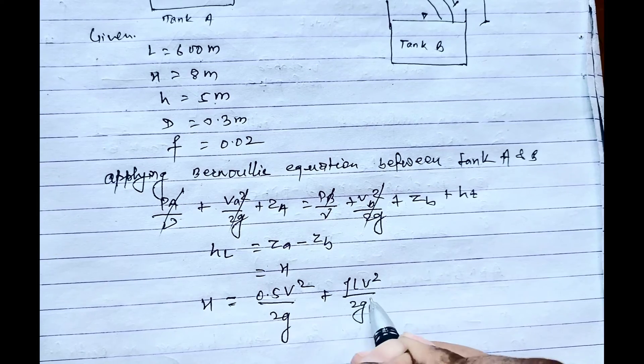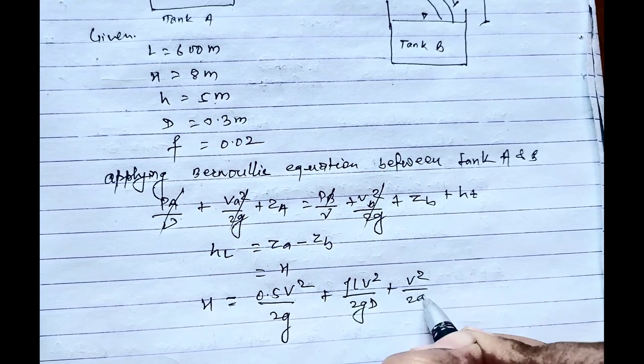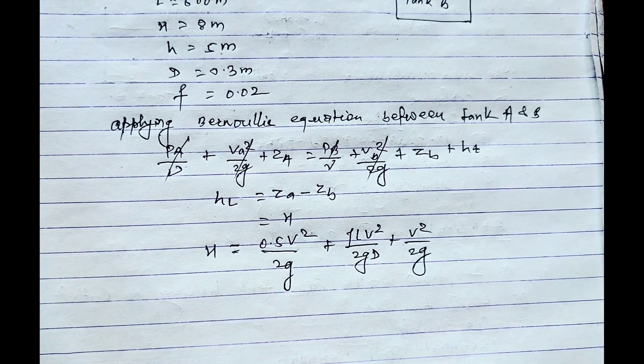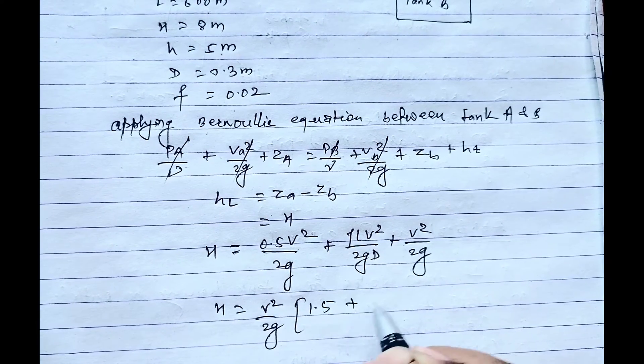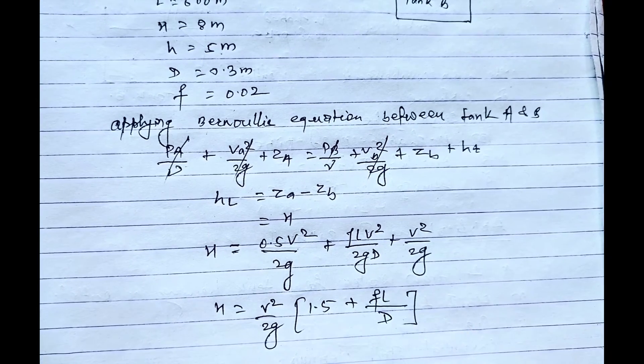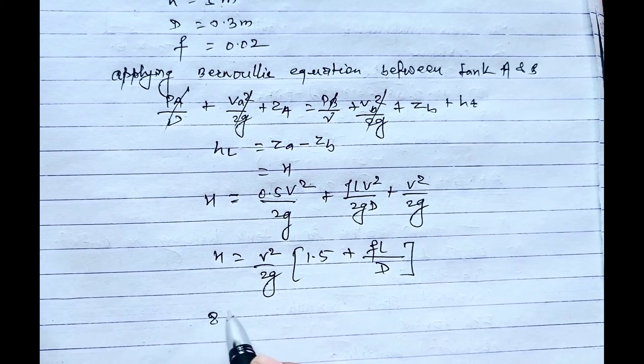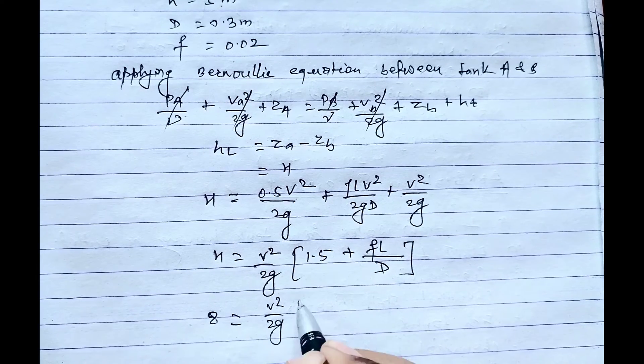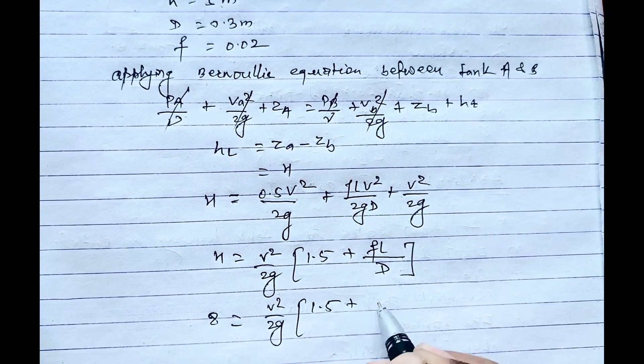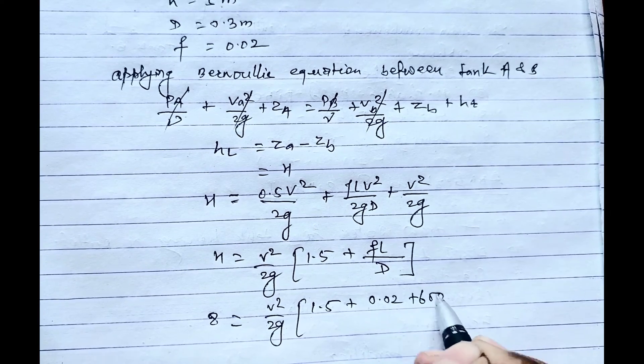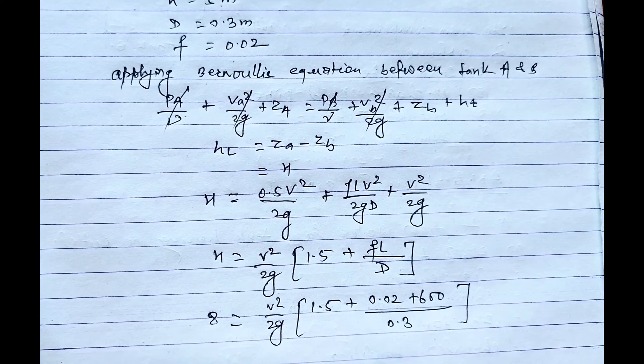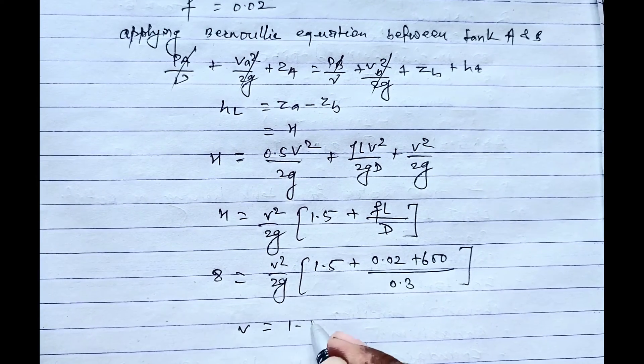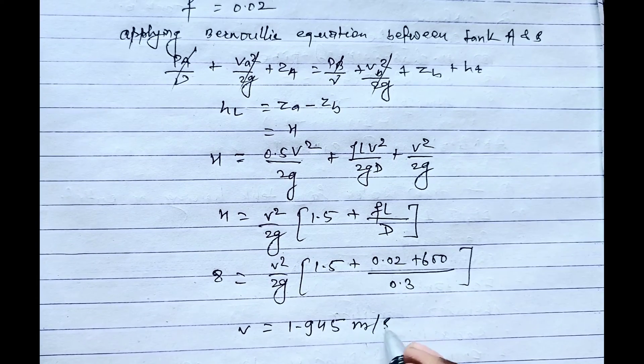Placing the value in this equation: H equals V²/2g times (1.5 + fL/d). H is given as 8 and V²/2g times (1.5 + 0.02 × 600/0.3). On solving this, we'll get the value of V equals 1.945 meters per second.